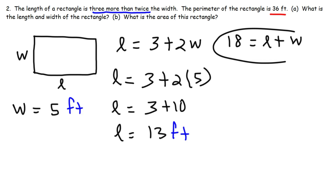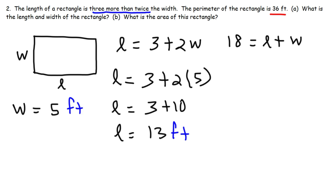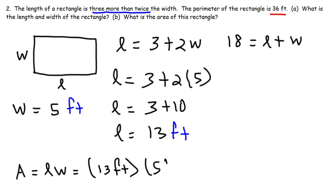That makes sense because L plus W equals 18, and 5 plus 13 is indeed 18. We now have the length and the width of the rectangle. The last thing to do is calculate the area: area equals length times width, so 13 feet times 5 feet. 13 times 5 is 65, and feet times feet gives square feet. The area is 65 square feet.